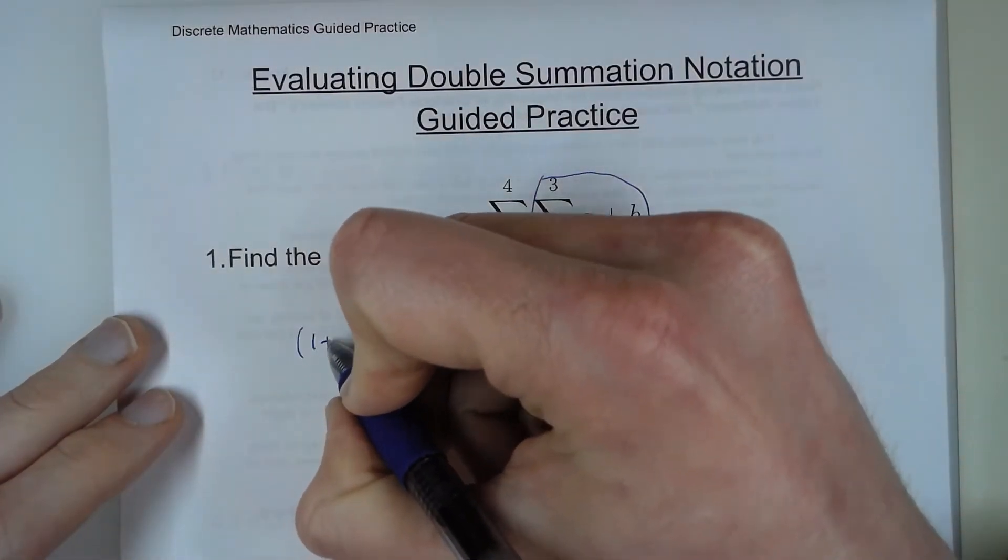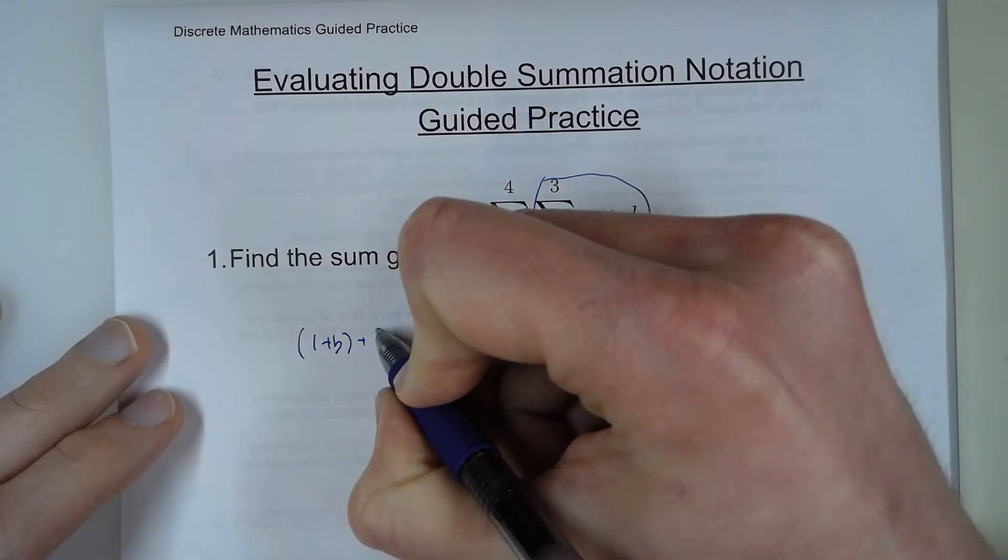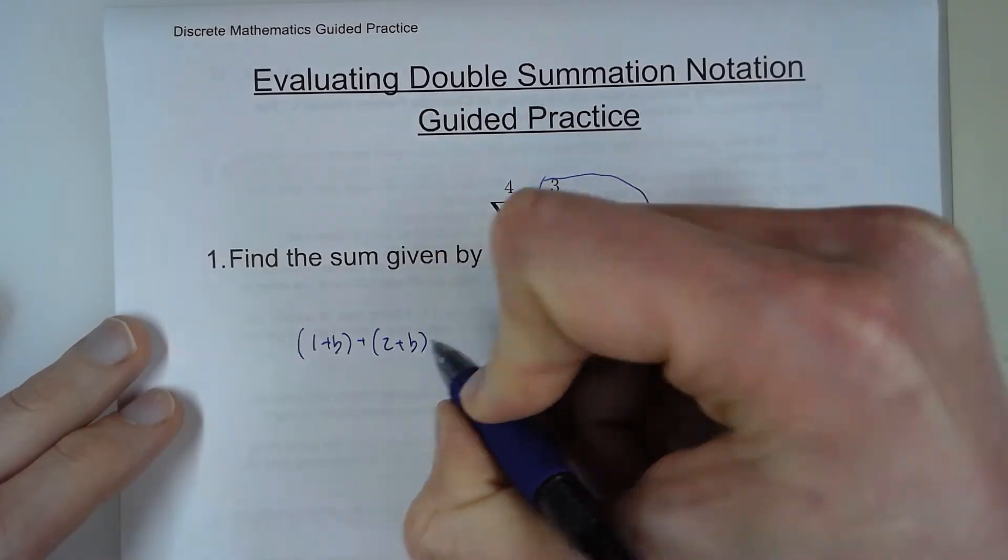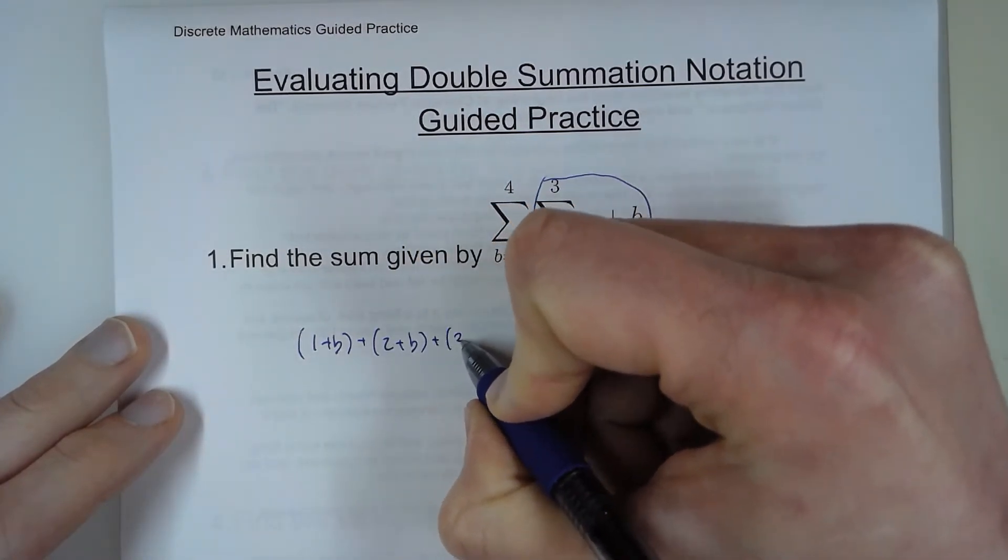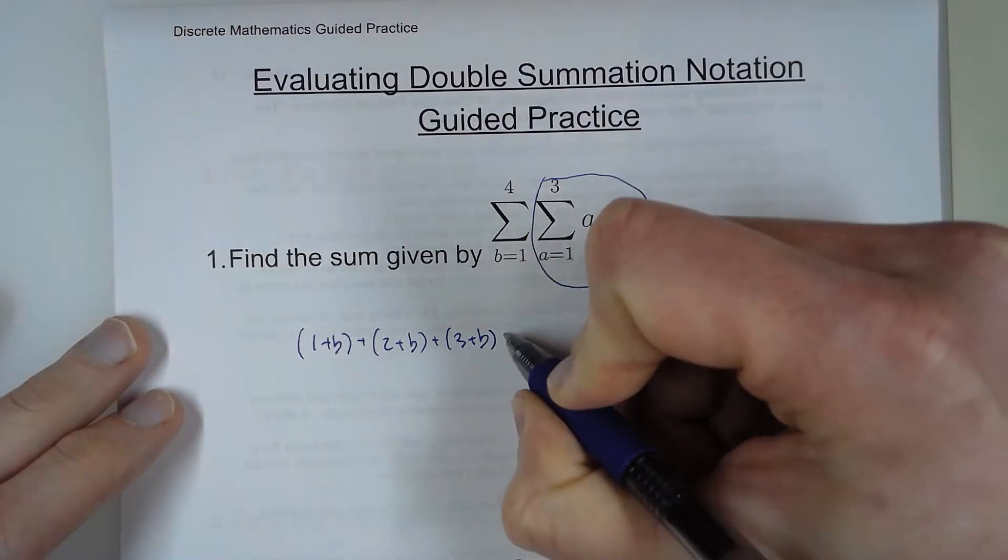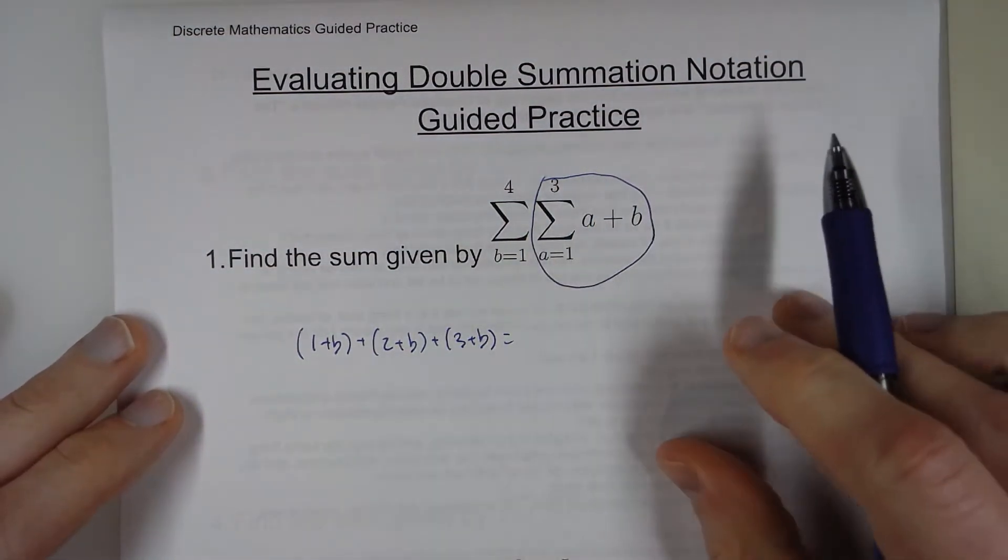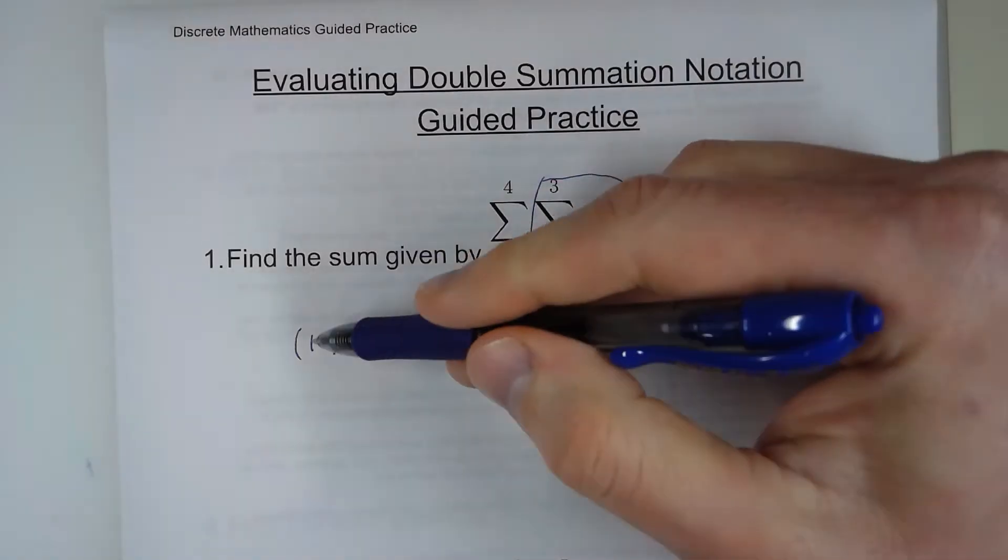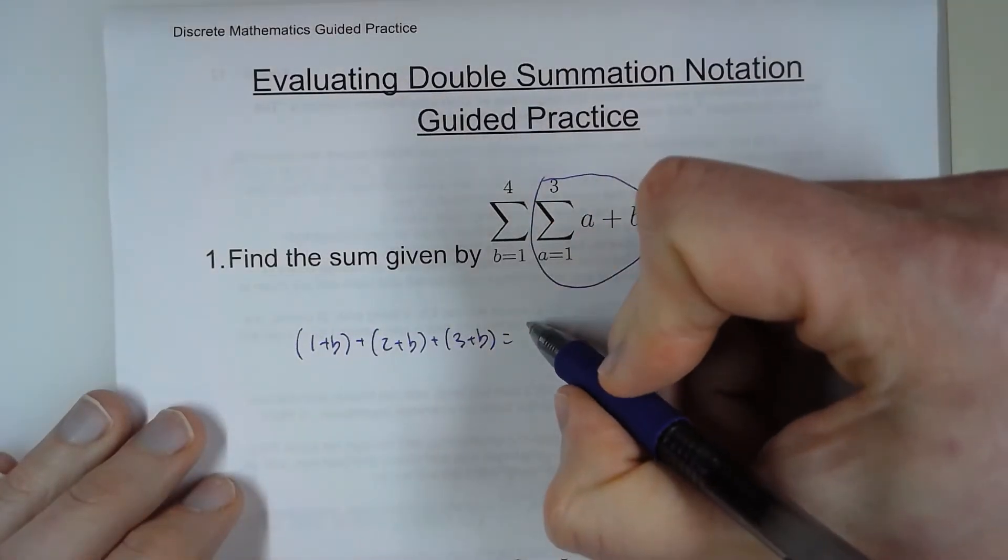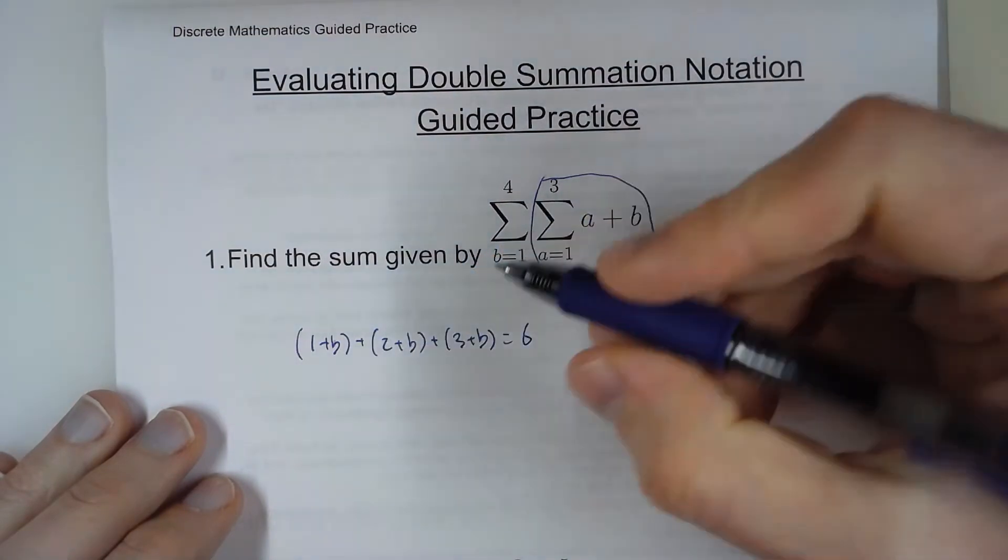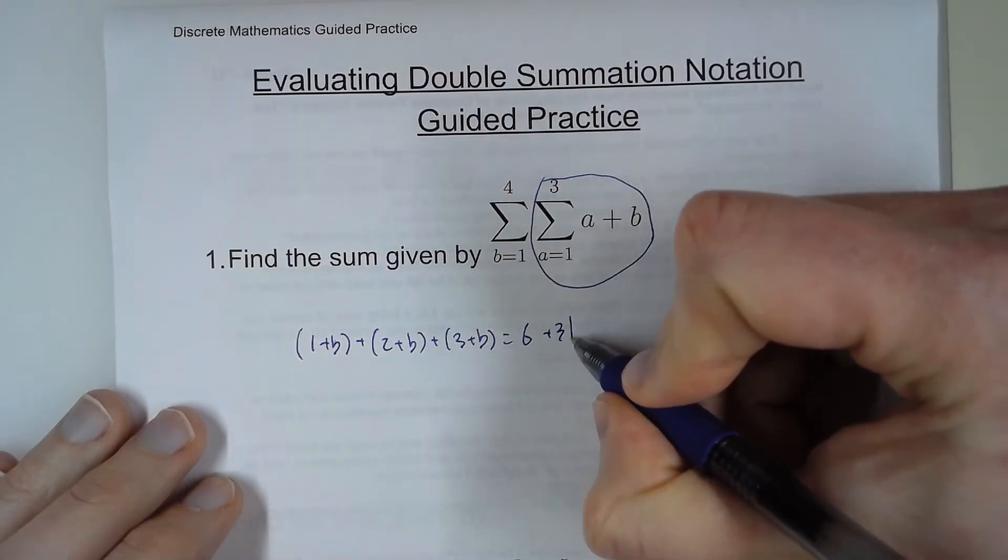So if I do that, 1 plus b, plus 2 plus b, plus 3 plus b. And that's what we get when we have all of this. So if I combine all these like terms, 1 plus 2 plus 3 is 6, and b plus b plus b is 3b.